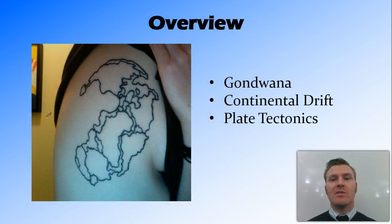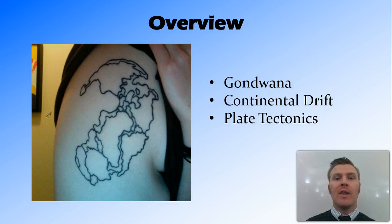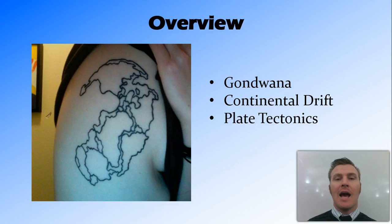In this video we've talked about the ancient supercontinent of Gondwana, which existed around 100 to 150 million years ago. We've discussed Alfred Wegener and his suggestion of continental drift, and the evidence supporting it — including the close-fitting continental margins, the distribution of fossils, and the mountain ranges found on continental boundaries.